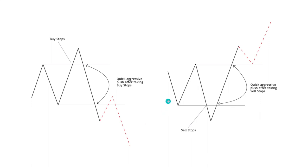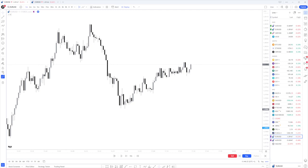On the flip side, a bullish breaker block is exactly the same except in reverse. We've got a bearish push down, a run on the sell stops and the breakout traders in this area, then a very aggressive push back to the upside with some imbalance left behind around this area. Our breaker block is the buy candles before the impulsive sell. We'll see price come back, retest this level, and then push further to the upside.